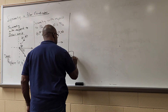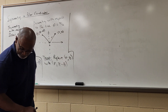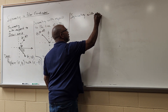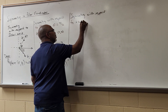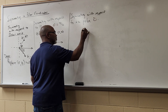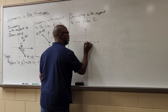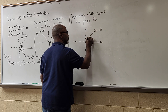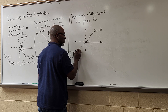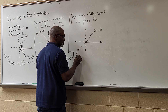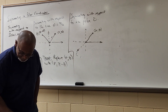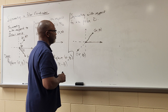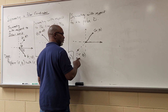The third type of symmetry is symmetry with respect to the pole. There's the polar axis and there's the pole. If we have some point (r, θ), symmetry with respect to the pole means we'll also have the point (-r, θ) on the graph. If (r, θ) is on the graph of that function, then (-r, θ) will also be on that graph.